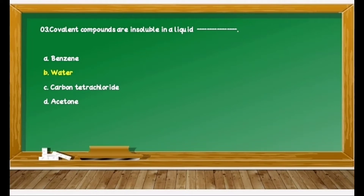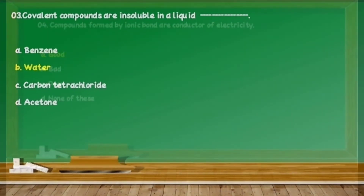Question 23: Covalent compounds are insoluble in a liquid — that liquid is dash dash. Options are: A) benzene, B) water, C) carbon tetrachloride, D) acetone. We know that covalent compounds are present in non-polar form, and such non-polar compounds are always insoluble in a polar solvent. Here, option B is water, and water is a polar solvent. Therefore, the answer is option B, water.